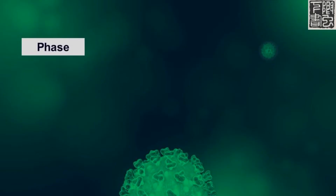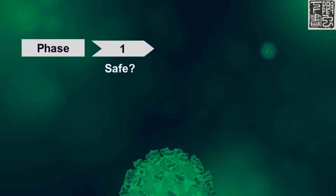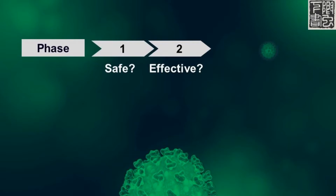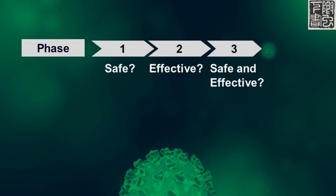Before commercial use, a vaccine needs to demonstrate that it is effective and safe in clinical trial. Phase 1 tests the vaccine's safety. Phase 2 tests the vaccine's effectiveness in a small group of people. Phase 3 tests the vaccine's safety and effectiveness in a large population.